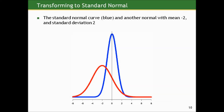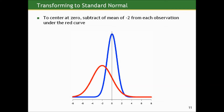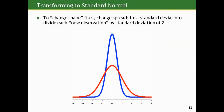Let me show you an example of doing that. The standard normal curve is represented by the blue curve, and there's another normal curve with mean of negative 2 and standard deviation of 2. To re-center it from negative 2 to 0, we subtract the mean of negative 2 from each observation under the curve — it will slide over and be centered at 0. Then to change the spread, we divide each of these new observations by the standard deviation of 2. And voilà — we've transformed this red curve into a standard normal curve. We shift it over and squeeze it.